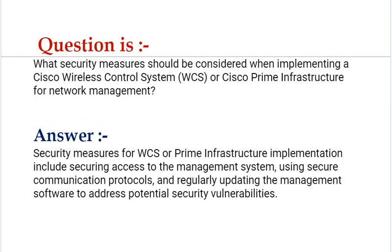Our next interview question is: What security measures should be considered when implementing a Cisco Wireless Control System (WCS) or Cisco Prime Infrastructure for network management? Your answer should be: Security measures for WCS or Prime Infrastructure implementation include securing access to the management system using secure communication protocols and regularly updating the management software to address potential security vulnerabilities.